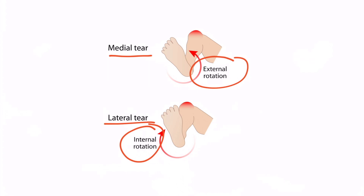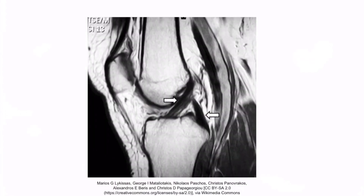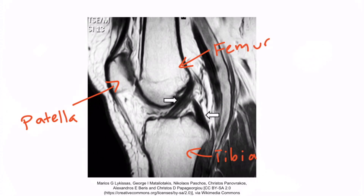Now let's review with imaging, as this is how you'll frequently be tested on step 1. This is an MRI of the knee. The easiest way to see the ACL and PCL is with a lateral view, which is what we're looking at here. The best way to orient yourself is by identifying the patella. You can see the patella here, confirming we're looking at a lateral view. The image has two arrows showing the ACL and PCL. I find it easiest to identify the PCL first. Remember, the posterior cruciate ligament runs from the posterior tibia.